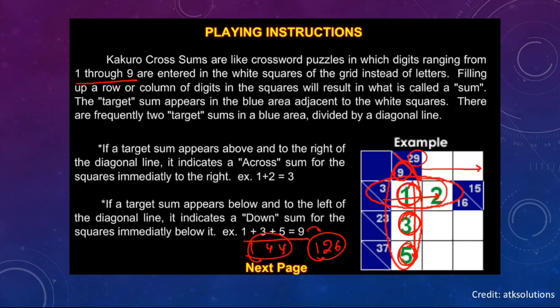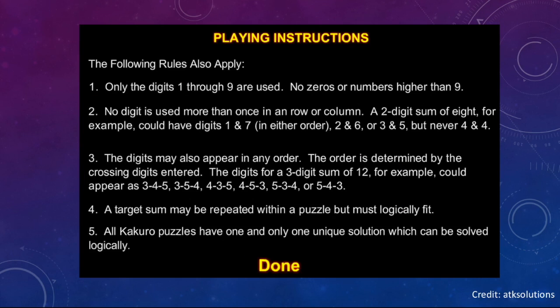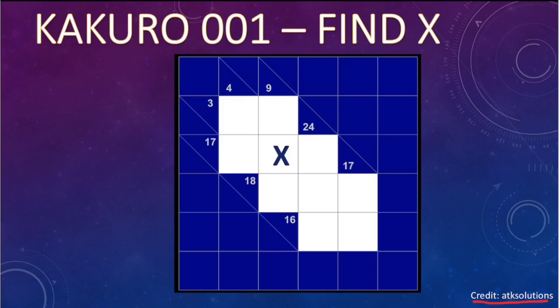Now, we have to cross check with the horizontal and vertical. That is nothing but a cross puzzle with digital sum. More or less near to Sudoku. But it is not Sudoku. The only similarity in Sudoku and Kakuro is we are going to use 1 to 9 only once for a particular sum. In this Kakuro 001, you just need to find X. So, I would say pause the video and find the value of X.